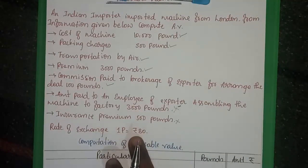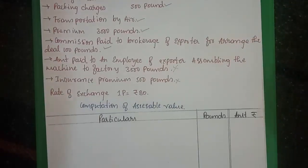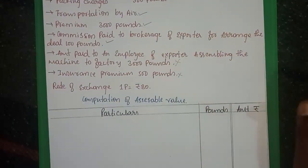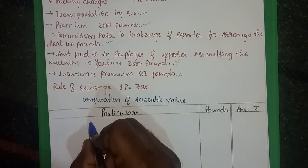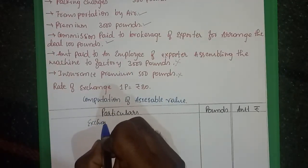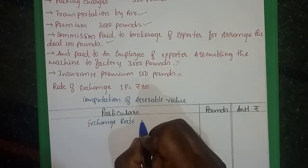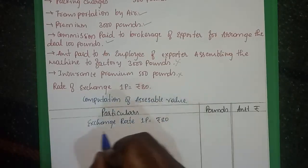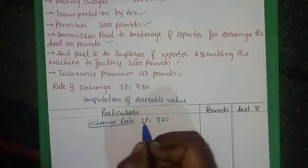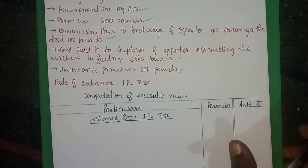The rate of exchange: one pound is equal to 80 rupees. This is the important exchange rate to remember. It is compulsory to take note of this — at minimum 10 marks are guaranteed from this assessable value problem.